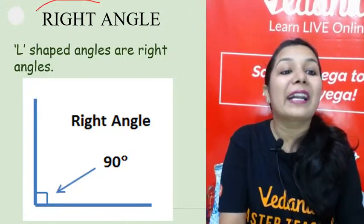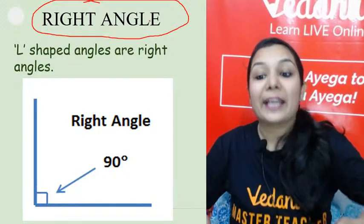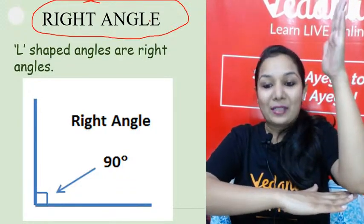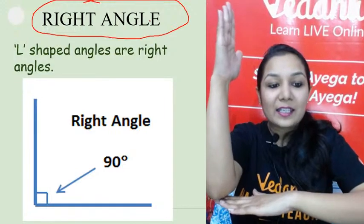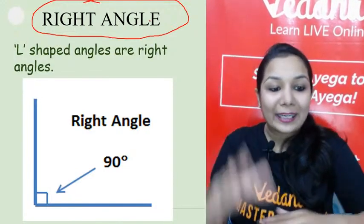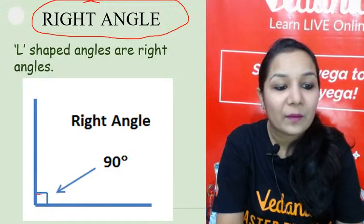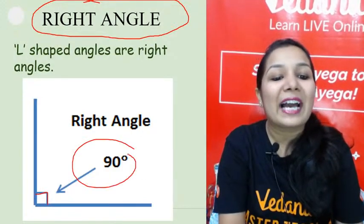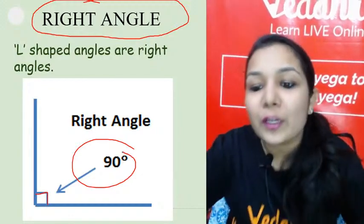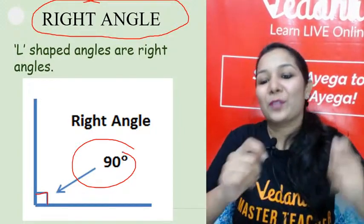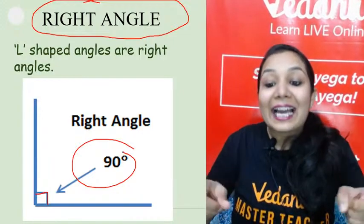The first angle is very easy — the right angle. You can form a right angle right now by joining your two arms. I've taken my right arm as the base. The angle formed where my two arms join is called a right angle, represented by a small square symbol. The measure of a right angle is 90 degrees — you can also call it L-shaped.